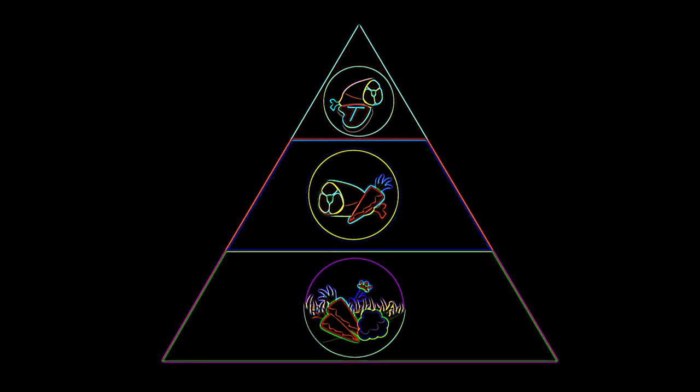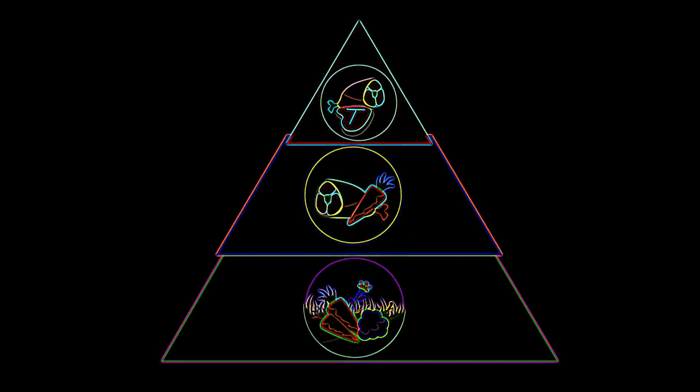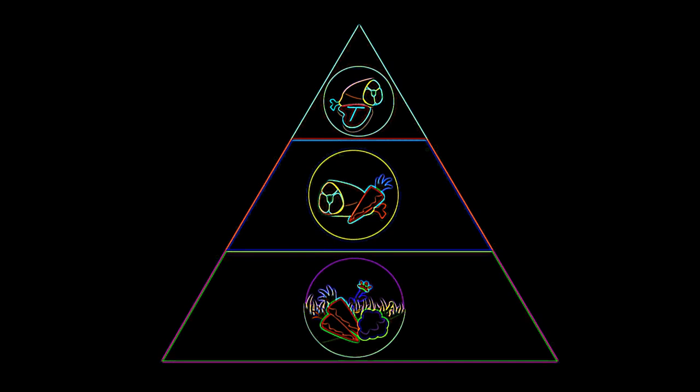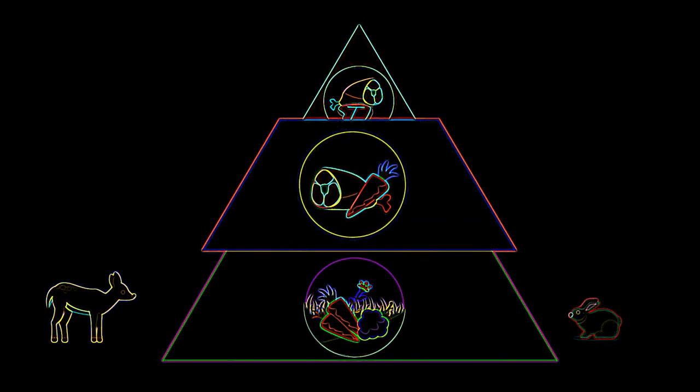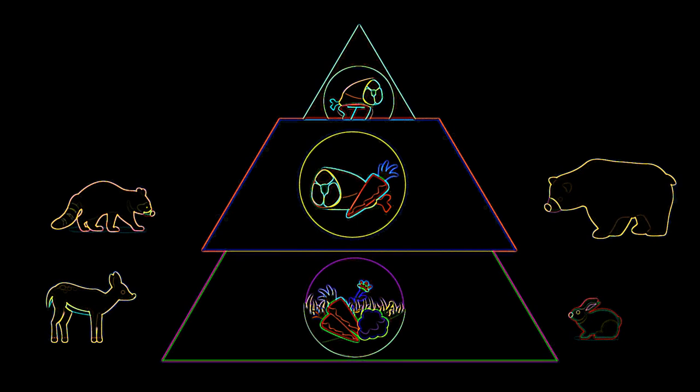A trophic level is how scientists classify animals based on their food preferences. At the lowest trophic level are the herbivores, those animals that primarily eat plants. In the next highest trophic level are the animals that eat the herbivores, as well as some plants, known as omnivores.